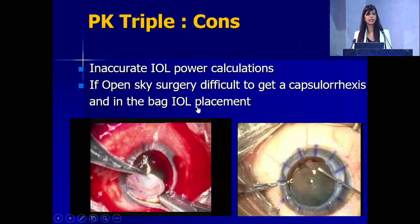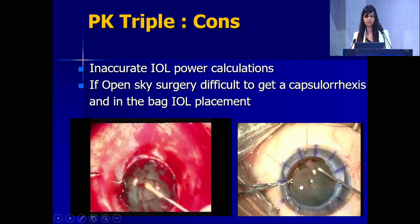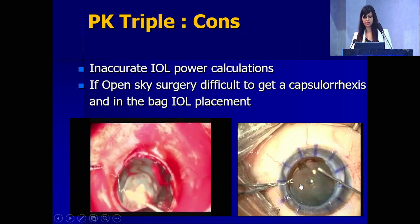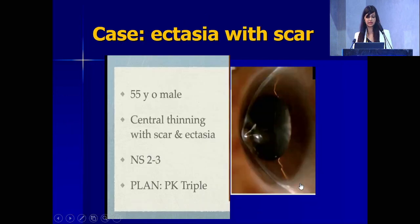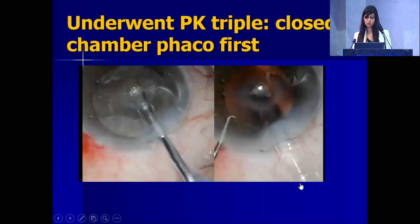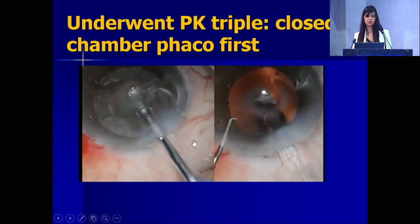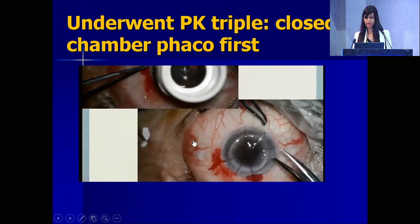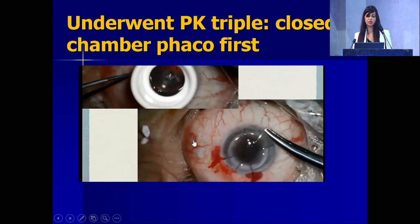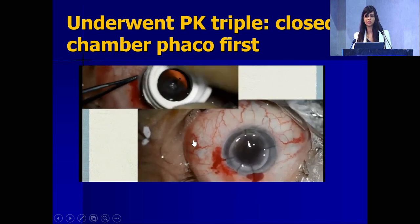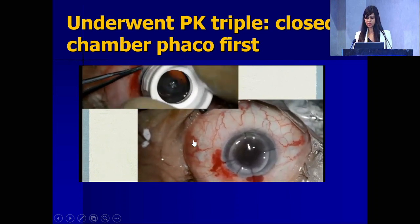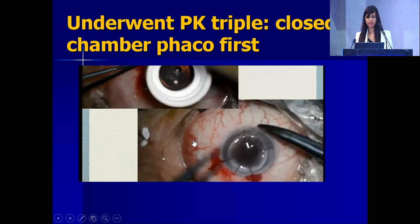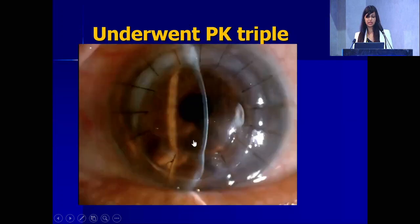When doing a combined PK, the concern is that with open-sky surgery it is very difficult to achieve a capsulorhexis and in-the-bag placement. The way to deal with that is — in a patient with advanced keratoconus and scarring — you first do the phaco surgery, implant the intraocular lens, and then do the keratoplasty. That way you are doing a closed-chamber phaco and getting a good result without opening the eye.